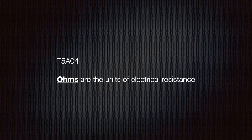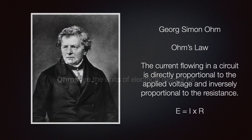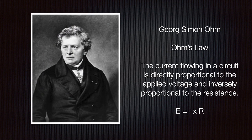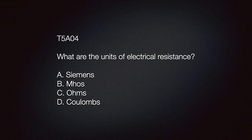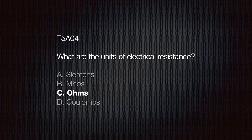You should learn that ohms are the units of electrical resistance. The unit is named after George Simon Ohm, the inventor of Ohm's law. Ohm's law states that current flowing in a circuit is directly proportional to the applied voltage and inversely proportional to the resistance. You don't need to remember that verbatim. Just know that an ohm is a unit of resistance. Our test question is, what are the units of electrical resistance? A Siemens, B mohms, C ohms, or D columns? Did you select C ohms? If you did, you're doing great.